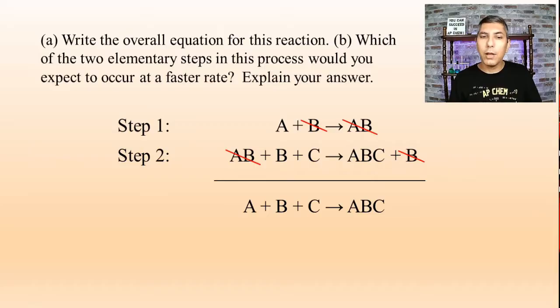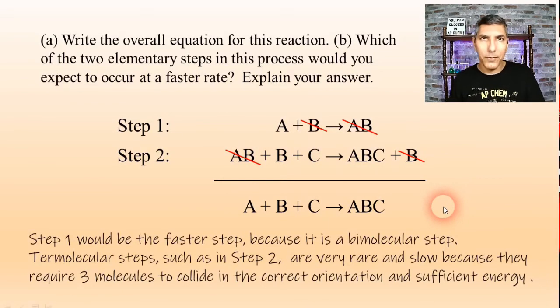Now, part B says, which of the two elementary steps in the process would be faster? Well, notice that step one is a bimolecular step. That means it has two molecules reacting with each other. That's fairly typical in an elementary step. However, step two is a termolecular step. That means it has three molecules reacting at the same time. And that's actually quite rare.